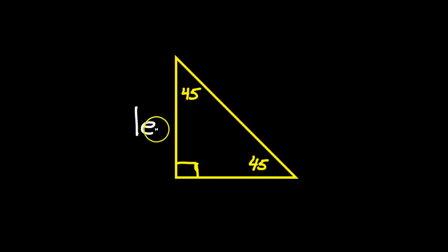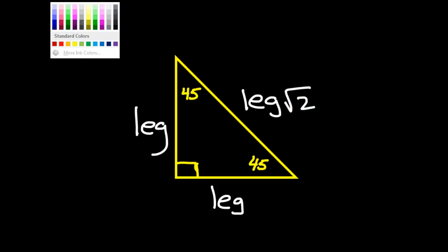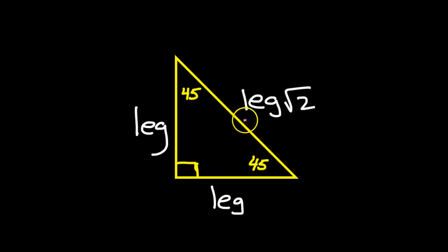We know that the pattern goes like this: leg, leg, and then for the hypotenuse, is always leg radical two. That's a fact. Now, if they tell us that the hypotenuse is equal to eight radical three, that means leg radical two equals eight radical three. We can just set this expression equal to the value that they give us. So we should be able to solve this expression for the leg.